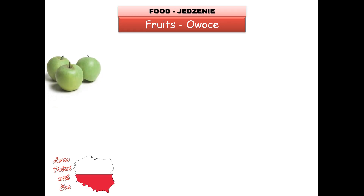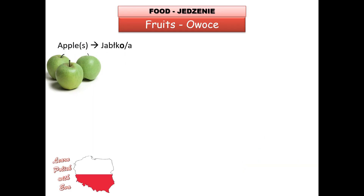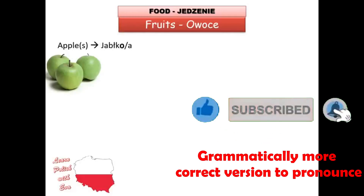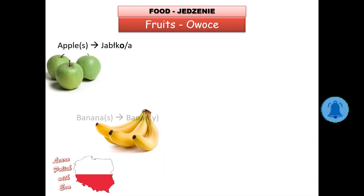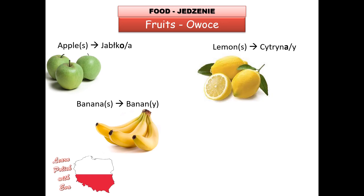Now it's time to explore some of the fruits — 'owoce'. Apples are extremely popular in Poland because we cultivate a lot of them and they are really, really good. That's 'jabłko', 'jabłka'. After that, bananas — simple: 'banan' or 'banany' in the plural version.